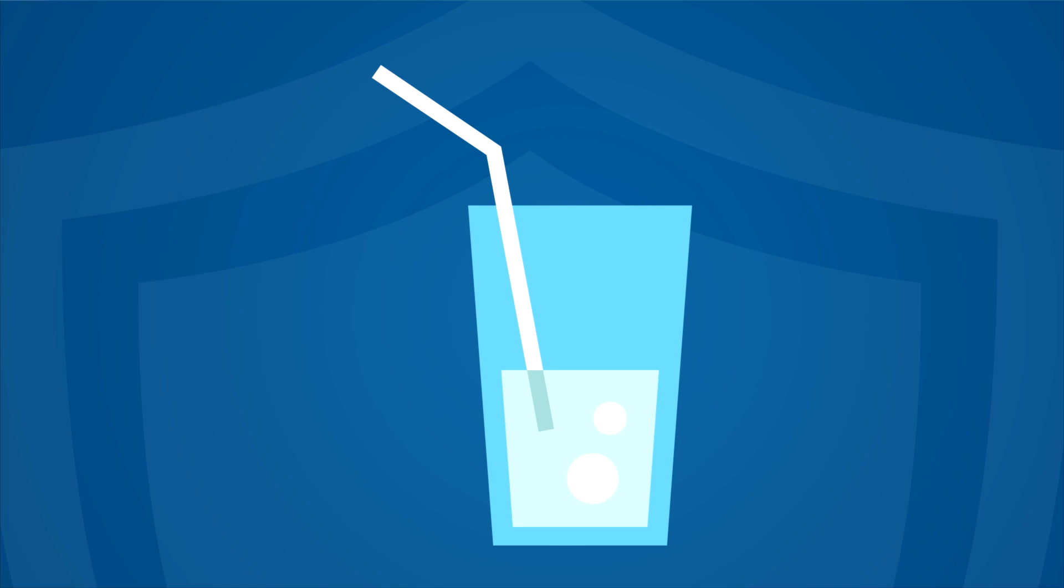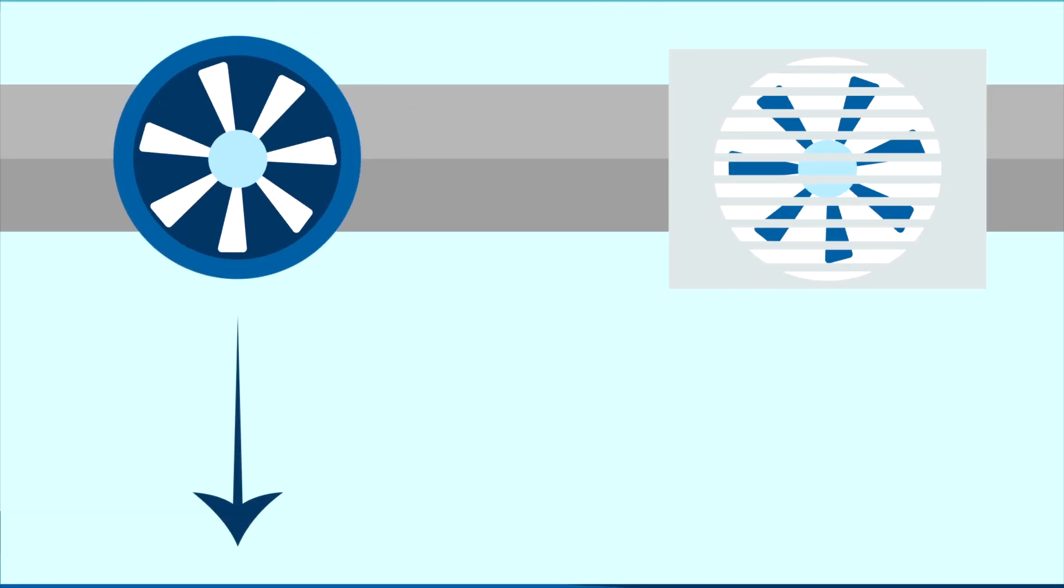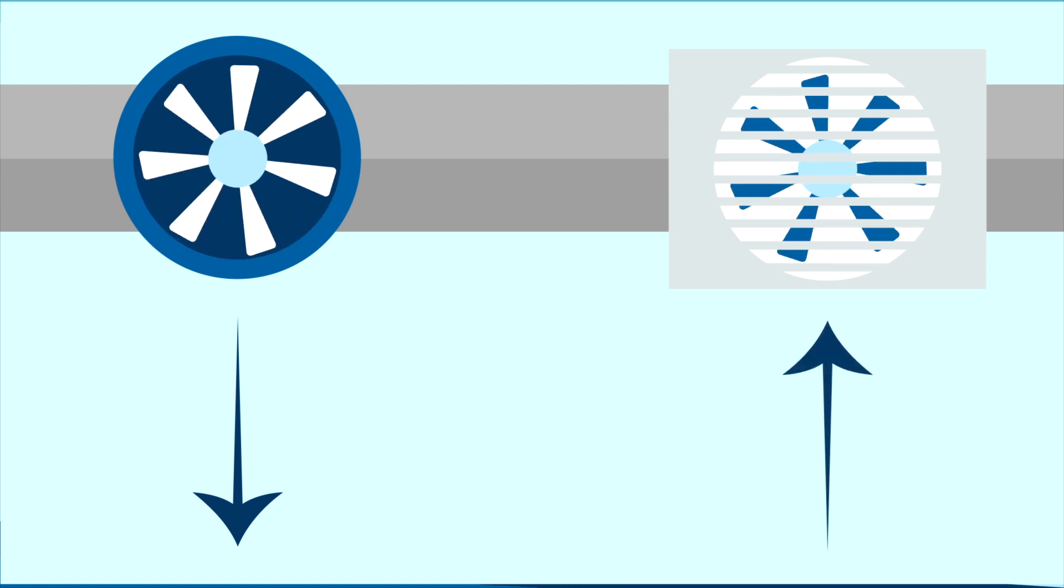Air within a negative pressure room works the same way. We use supply fans to blow air into a room and exhaust fans to suck the air out of a room.